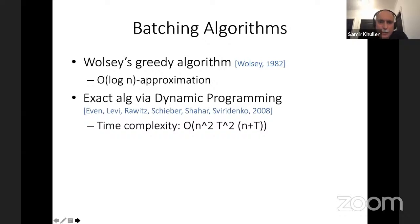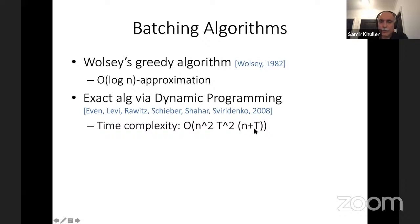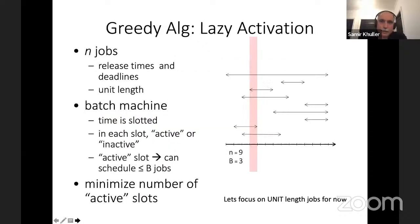Our main question was: can we solve this problem exactly with a better algorithm? I'm going to show you a very simple algorithm. The motivation is something we call lazy activation: why should I turn the machine on unless I really have to? Our basic goal should be to worry about the job with the earliest deadline first, and there's no real advantage in doing this job too aggressively early. If I delay doing this job, we can maximally overlap with other jobs. So the strategy is to do the job as late as possible, and when I do turn the machine on with batch capacity B, I can do B minus one other jobs at the same time.